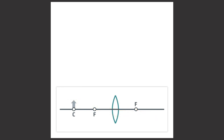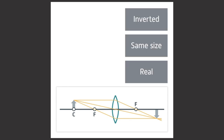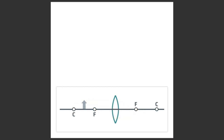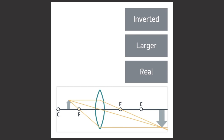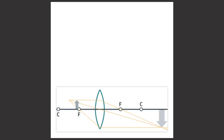If the object is at point C, the image formed will be inverted, the same size as the object, and real. The image will be positioned at point C on the other side of the lens. If the object is between C and F, the image is inverted, larger than the object, and real.